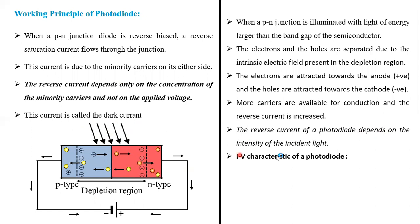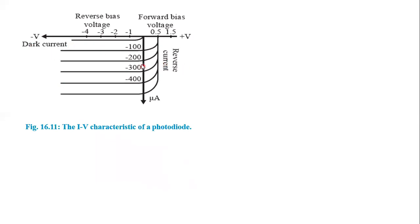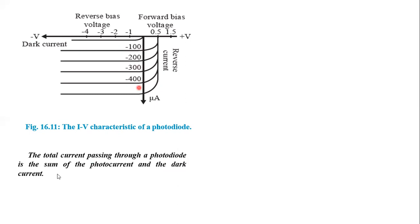Let's see this through the IV characteristics of the photodiode. This is the reverse bias region — the third quadrant. Without light incident, the reverse current is called dark current. When there is light incident, for a particular biasing voltage, the reverse current is around 10 microamperes. As we increase the intensity of light, this current increases. The total current of the photodiode is the sum of the photo current and the dark current.